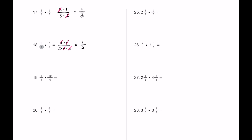For number 19, let's write out some prime factorizations. The composite numbers are 4, 10, and 6. 4 breaks into 2 times 2; 10 breaks into 2 times 5; the 5 stays as 5; and 6 breaks into 2 times 3. The 5s cancel and a pair of 2s cancel. On top we're left with 2 times 2, which is 4, and on bottom we have 3. The answer is 4 thirds, or 1 and 1 third as a mixed number.